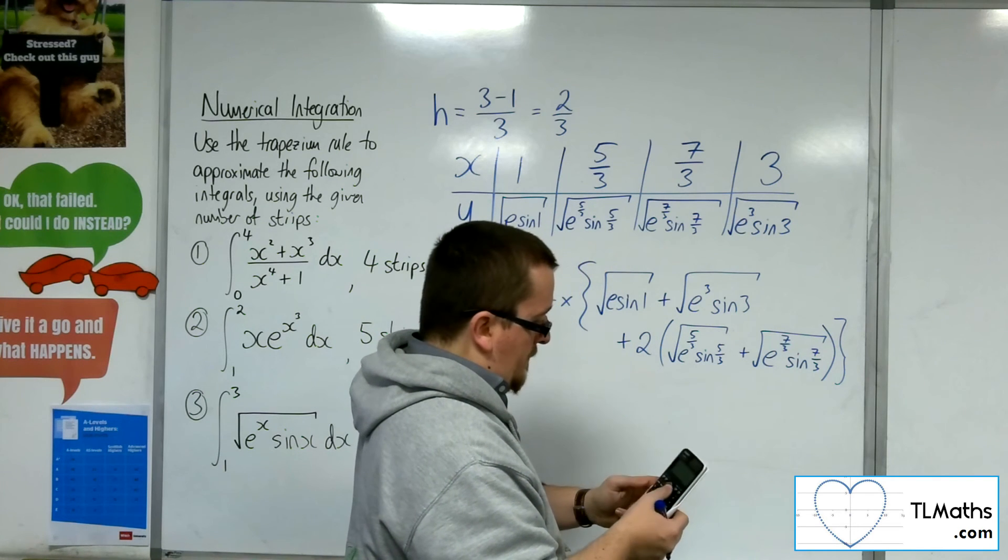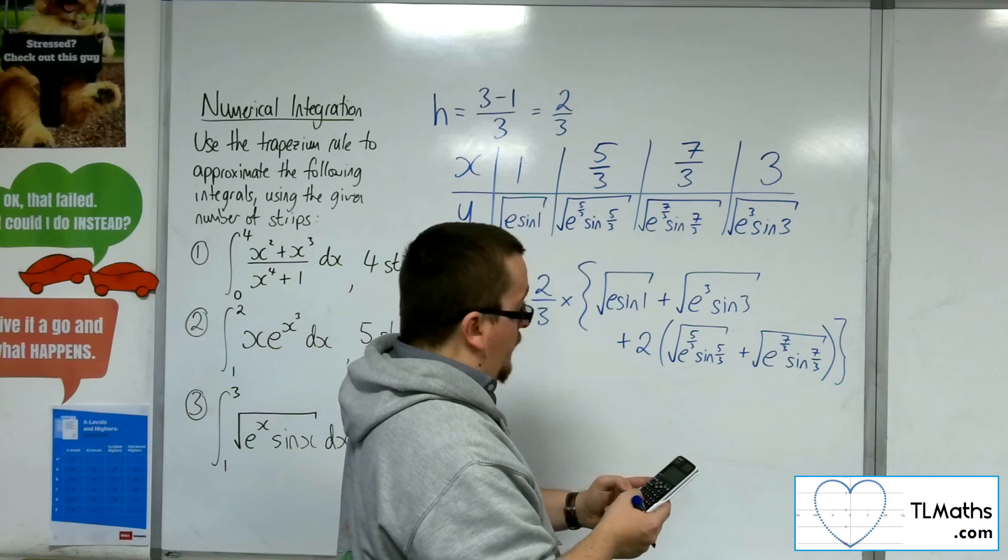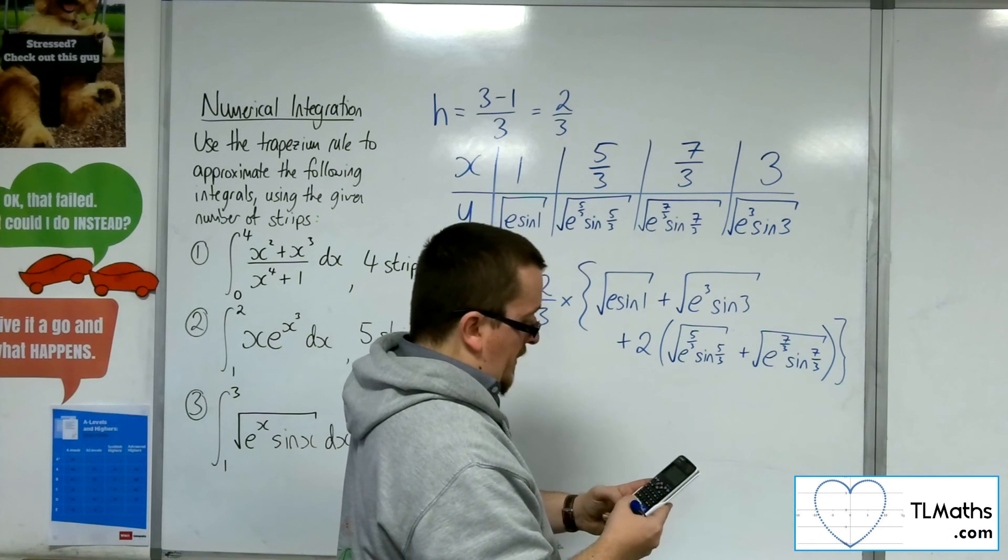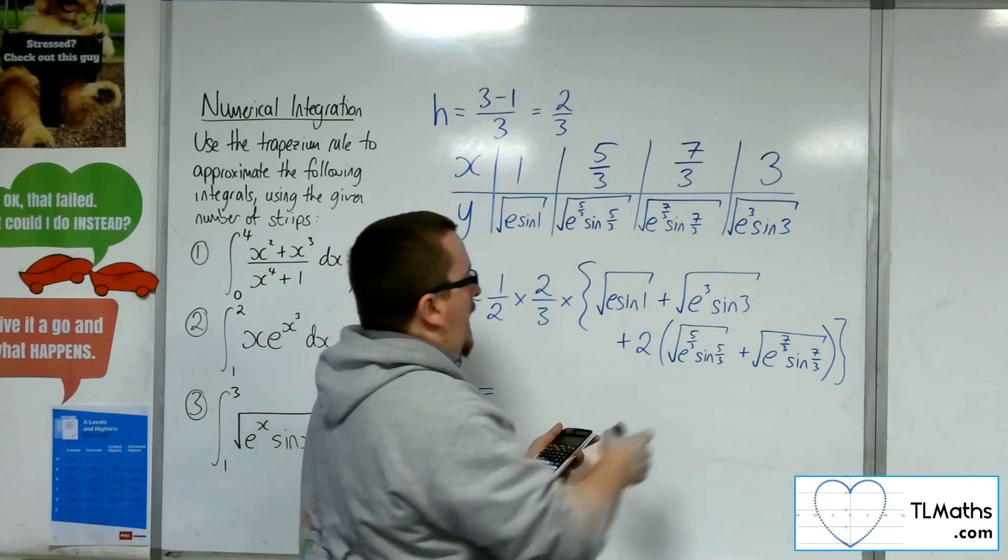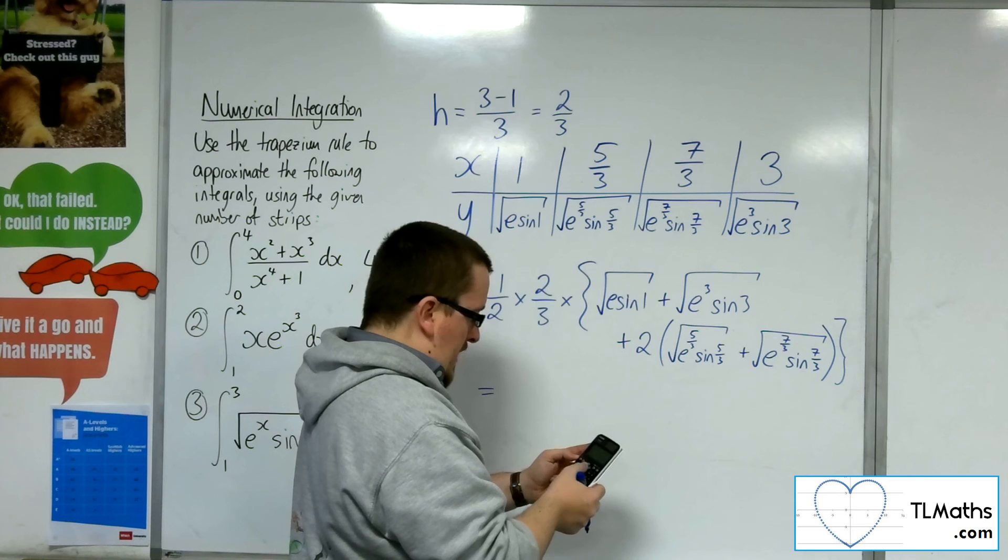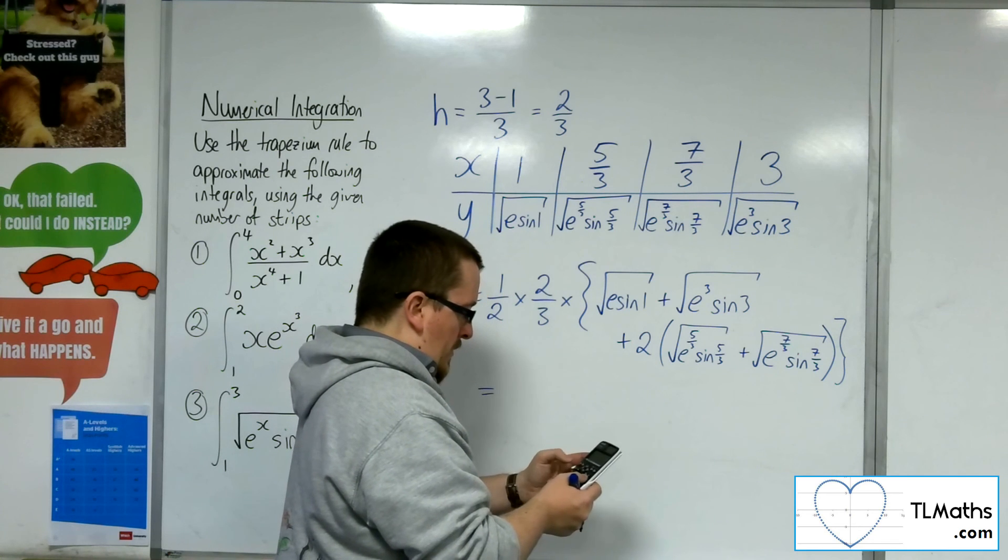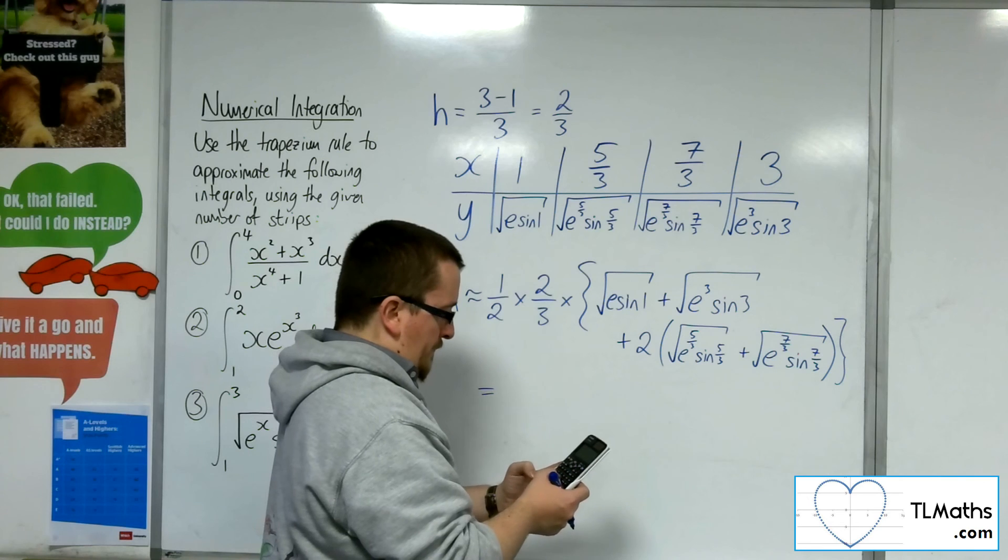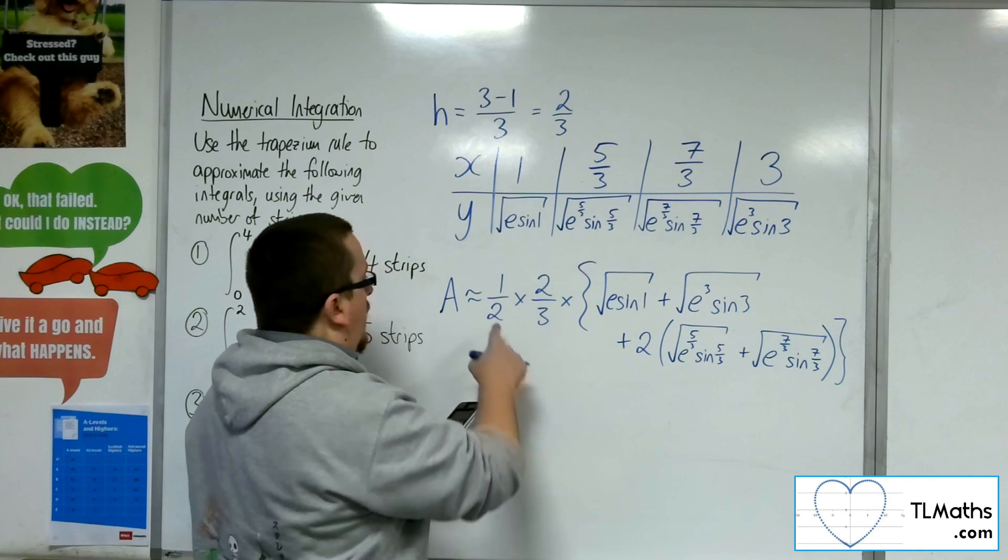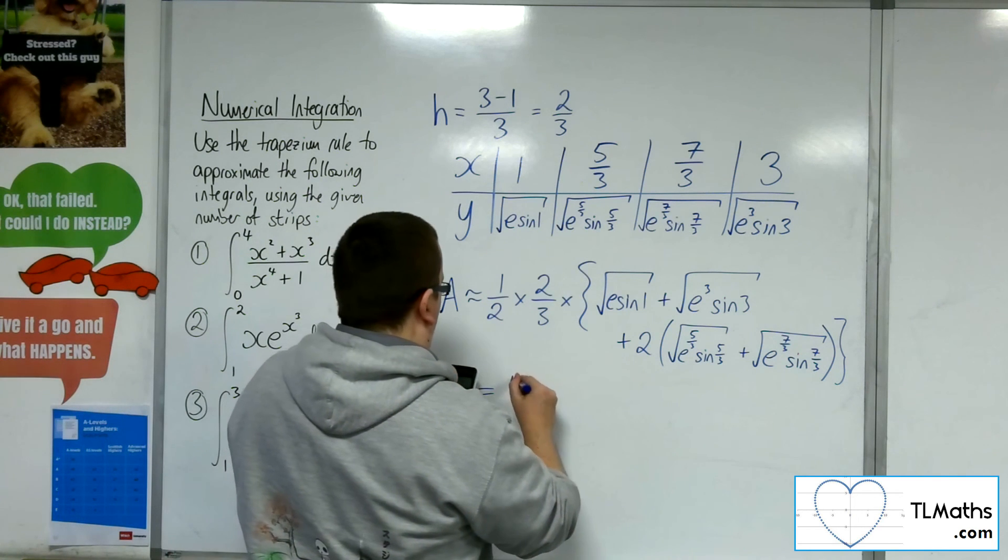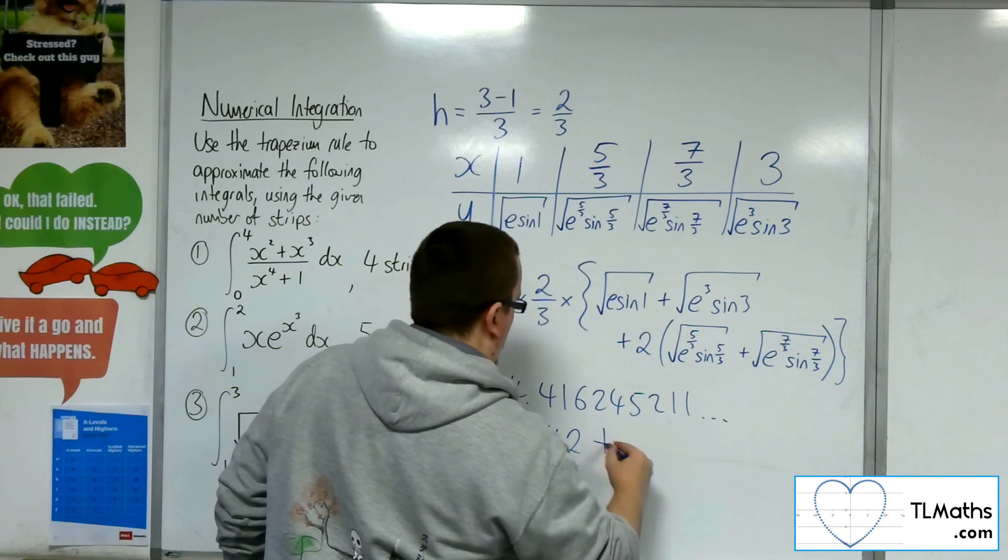Square root of e to the 5 thirds times sin 5 thirds. And then add on the square root of e to the 7 thirds times sin 7 thirds. So that gets us 5.026. Double it. Add on these two terms. So add on the square root of e to the 3 times sin 3. And then add on the square root of e to the 1 times sin 1. So that gets me 13.248 times by 2 thirds times by half. So that gets me 4.416245211, which is 4.42 to 3 sig fig.